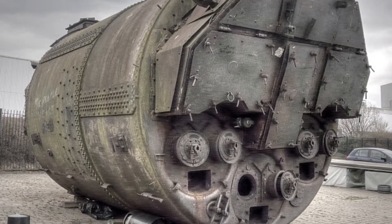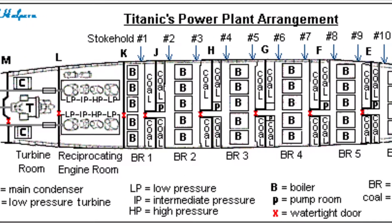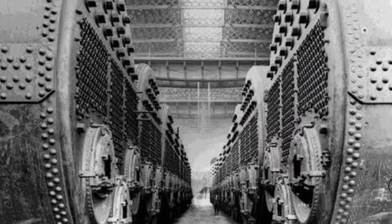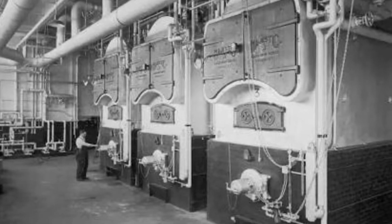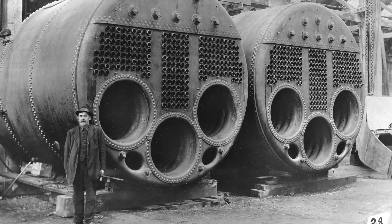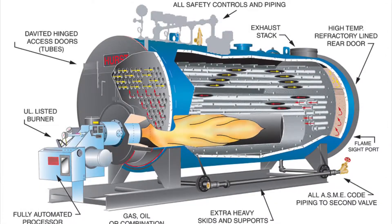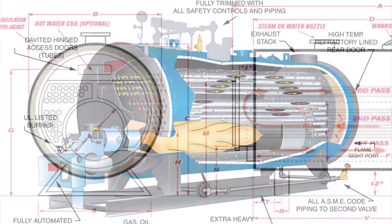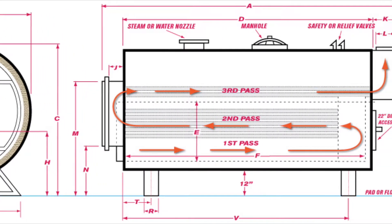The Scotch marine boiler is the most popular fire tube boiler design still in use today. Originally made for steam and marine engines, it was used even on the Titanic, which carried a total of 29 Scotch marine boilers. Its high efficiency comes from the many fire tubes inside the water tank. Hot gas from combustion exits the central combustion chamber toward fire tubes on the side in the opposite direction, then flows back through fire tubes on the upper side in the same direction as the main combustion — meaning the flow of combustion gases inside the boiler essentially forms the shape of the letter S.